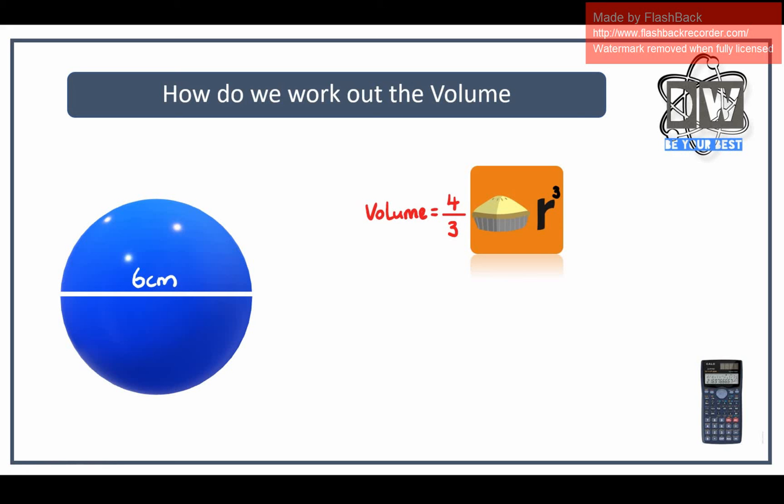So hopefully you've had enough time to run through that now. Let's take away the r and put in our value, which hopefully you realize was three. We've got our four over three times pi times three cubed, and our answer should have been volume equals 113.1 centimeters cubed.